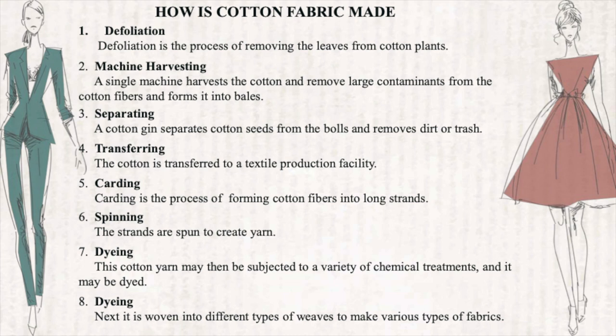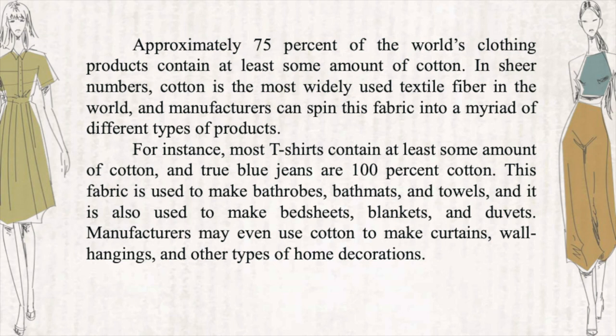Approximately 75 percent of the world's clothing products contain at least some amount of cotton. In sheer numbers, cotton is the most widely used textile fiber in the world, and manufacturers can spin this fabric into a myriad of different types of products. For instance, most t-shirts contain at least some amount of cotton and true blue jeans are 100% cotton. This fabric is used to make bath robes, bath mats, and towels, and it is also used to make bed sheets, blankets, and duvets. Manufacturers may even use cotton to make curtains, wall hangings, and other types of home decorations.